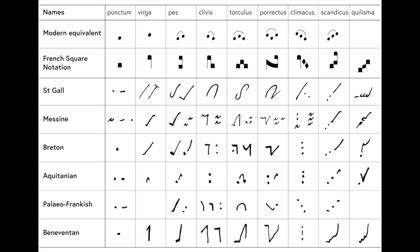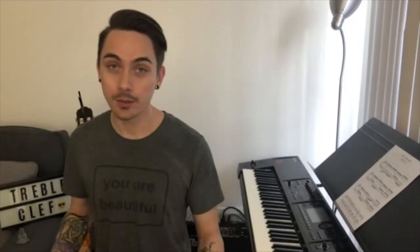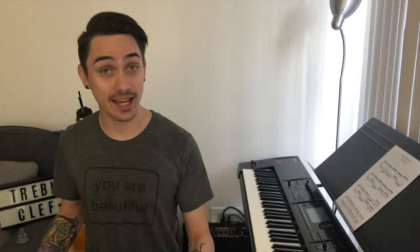When chants were initially written down, composers included lyrics and neumes, which were early symbols used to describe the basic contour of the chant's melody, but not specific pitches. Eventually, composers added a single staff line to identify the bass line or starting pitch, and they used good old-fashioned letters to describe what pitch that line represented.